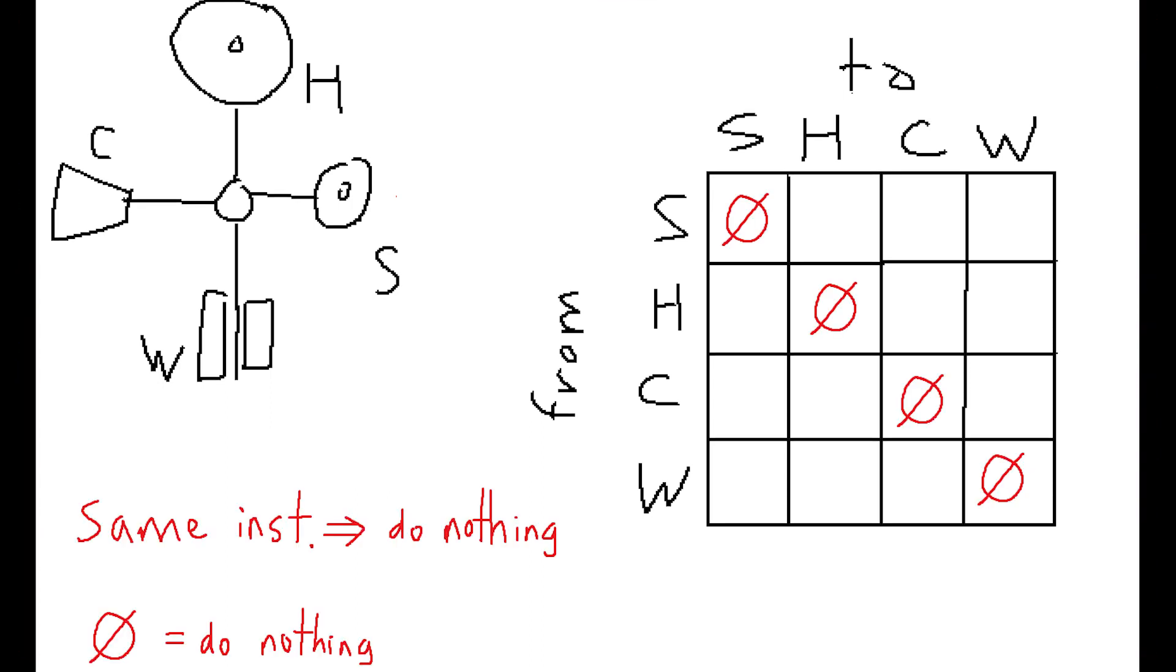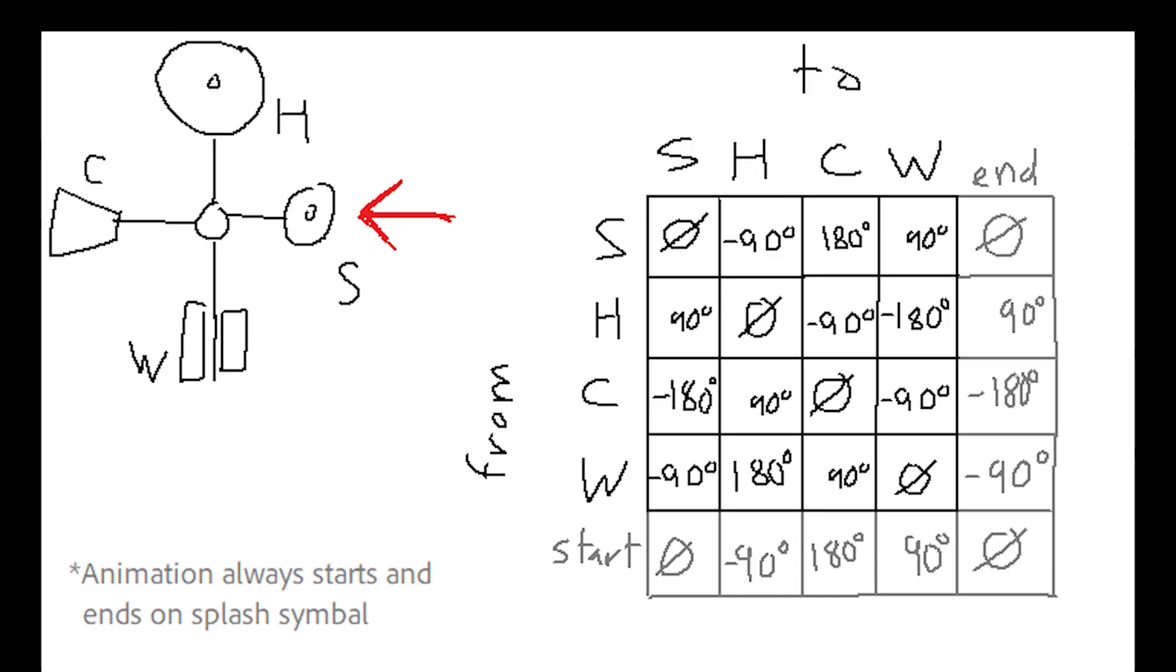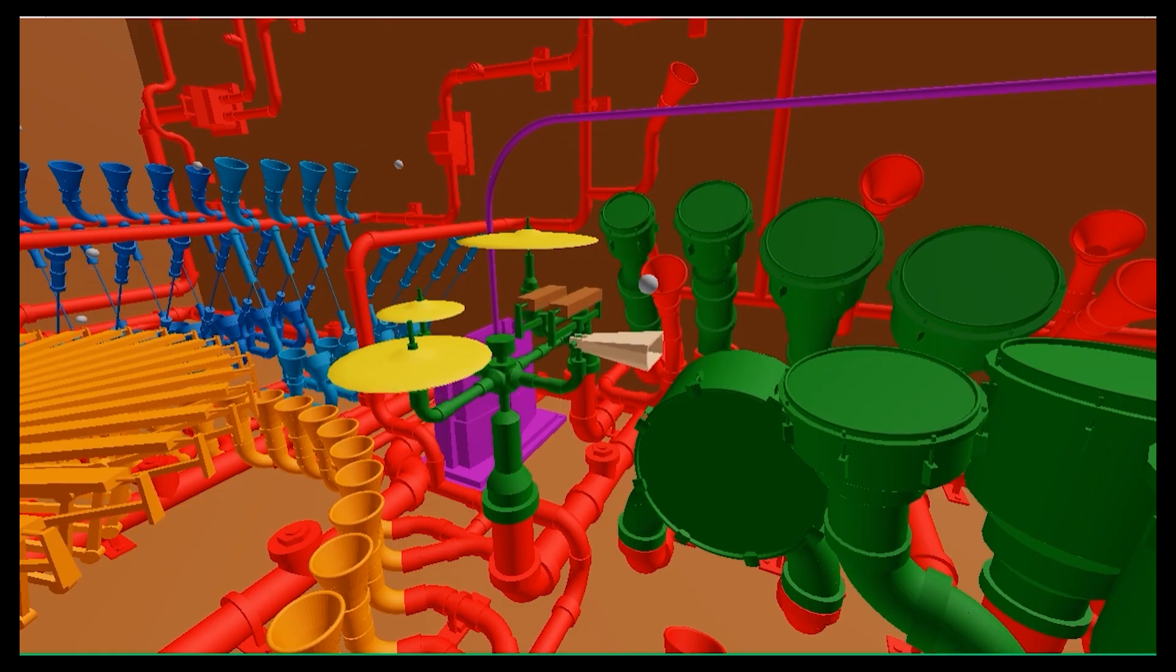So we can write this as whenever the matrix has the same row and column, we don't do anything. In other words, the diagonal of this matrix has no action, denoted by the nil symbol. I filled in all the other points by checking the original Pipedream video and seeing how it moved. And I also filled in just a few others just by best guesses.